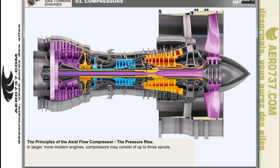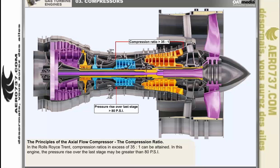In larger, more modern engines, compressors may consist of up to 3 spools. So effective is this method of compression that in an engine like the Rolls-Royce Trent, compression ratios in excess of 35 to 1 can be attained. In this engine, the pressure rise over the last stage may be greater than 80 pounds per square inch. The high pressures generated can result in compressor outlet temperatures of up to 600 degrees Celsius.